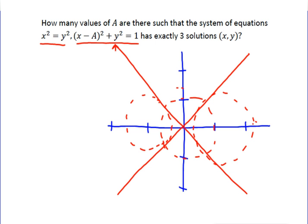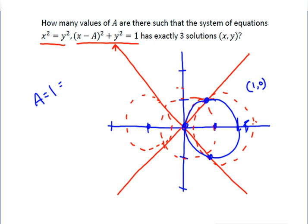So the only way to have three solutions is if one of your points is 0, 0. If you've got one point at 0, 0, the circle intersects right there at 0, 0 and then at two other points. We don't even need to know what those two points are — we just know it has three solutions total. The only way to get a circle that intersects at those three points is for it to be centered at 1, 0. So a has to equal 1, or a could equal negative 1 because of it being on the other side. The solutions are 1 and negative 1, and if you add those two together, that gives you 0.